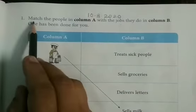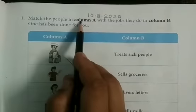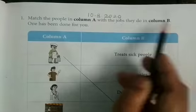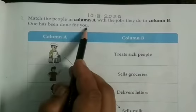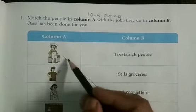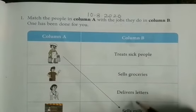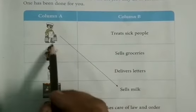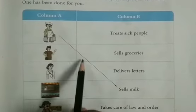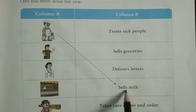And read this. Match the people in column A with the jobs they do in column B. One has been done for you. Check. The picture clues are given here and options are also there. So the first picture is of milkman and it is already matched with sells milk.